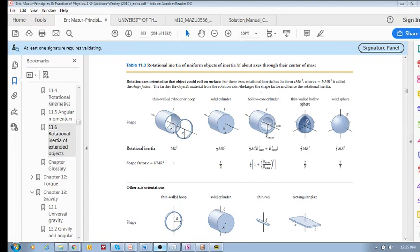One thing that I didn't mention when talking about Table 11.3 is that the rotational inertias derived here are about axes through the center of mass. So that's very specific. As you can see, all these axes are through the center of mass.